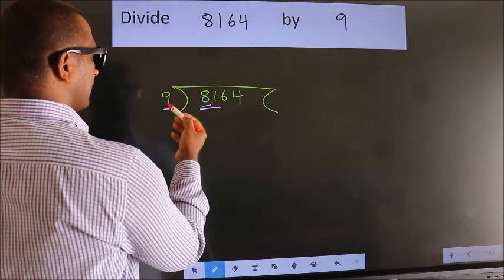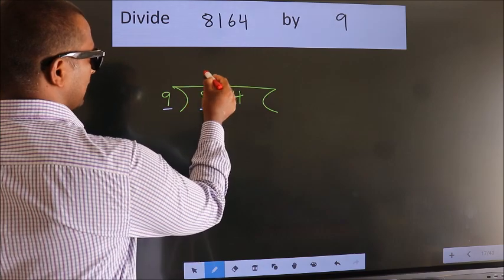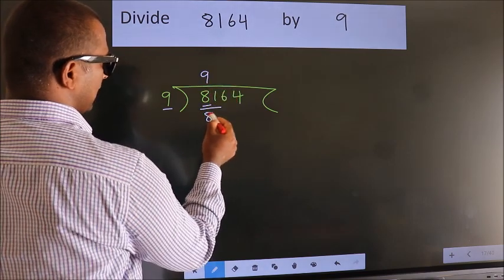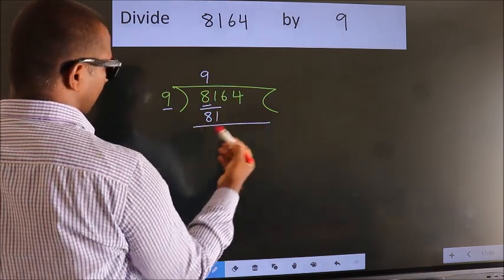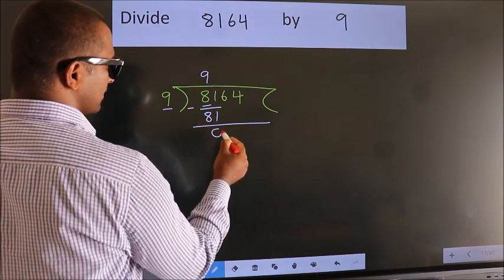When do we get 81? In the 9 table, 9 nines is 81. Now we should subtract. We get 0.